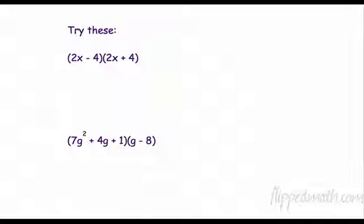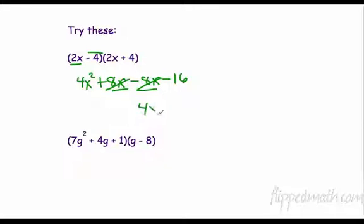You didn't pause the video, did you? I didn't think so. Well, here we go. Let's try it. First one, I'm going to do horizontally. So I'm going to double distribute. So I'm going to distribute 2x. 2x times 2x is 4x squared. 2x times 4 is 8x. Then I'm going to distribute negative 4. Negative 4 times 2x is negative 8x. And negative 4 times 4 is negative 16. Combine like terms. We got them right here in the middle. But 8 and negative 8 cancel out. So we're left with 4x squared minus 16.